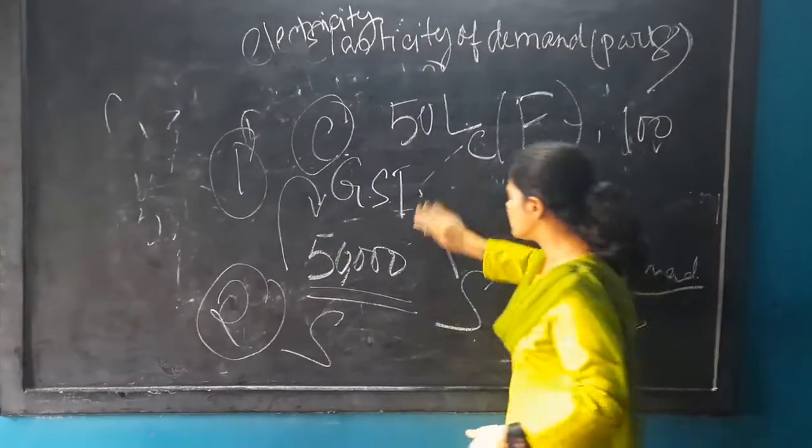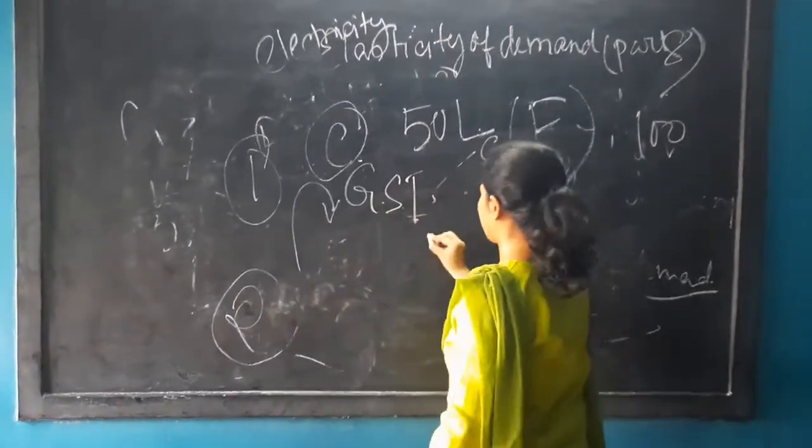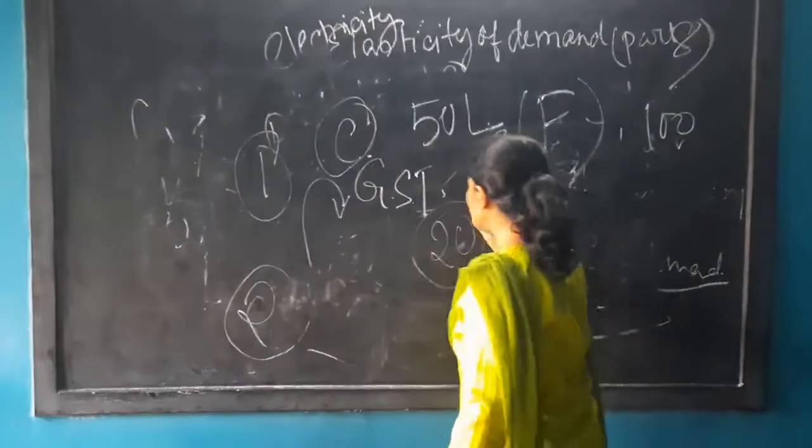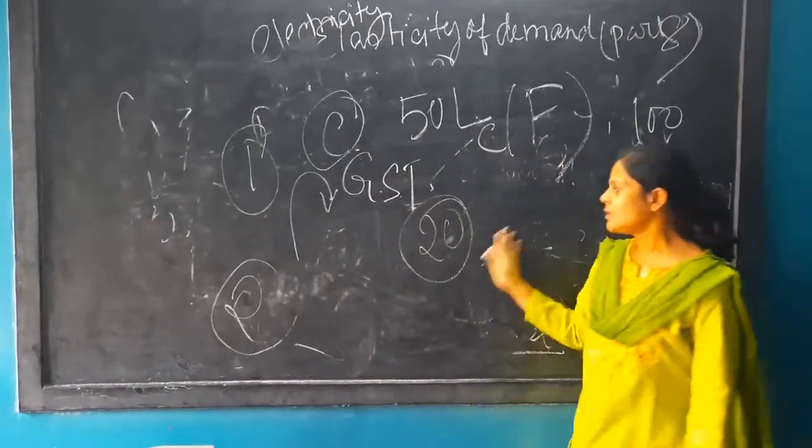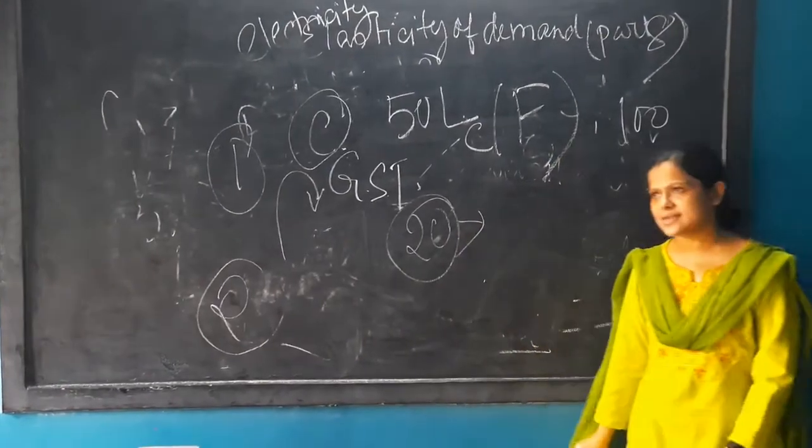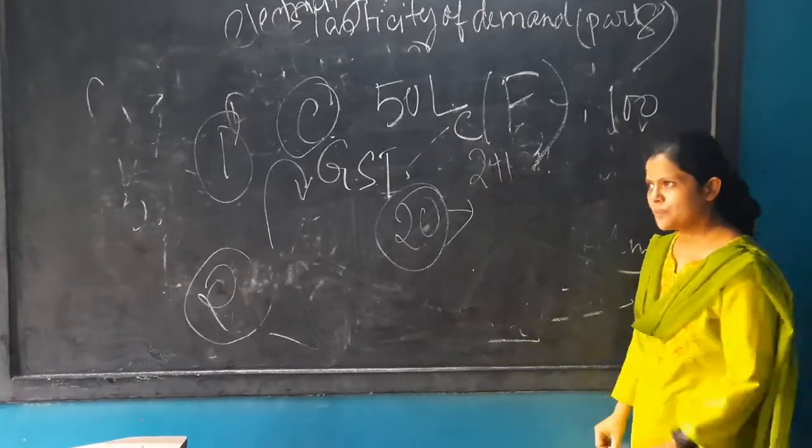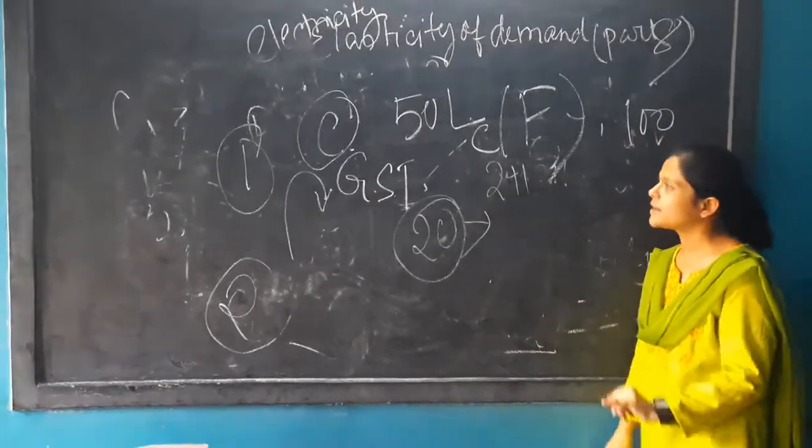Now, coming to a normal product. Suppose a biscuit packet costs 20 rupees, inclusive of all the prices. On this, how much can the government take as GST? Maximum two or three rupees.